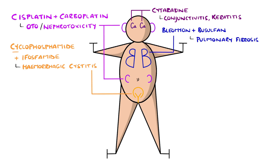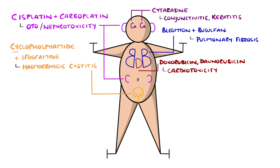Next to the lungs we have a heart, that roughly resembles the letter D, for doxorubicin and daunorubicin that cause cardiotoxicity. It also helps remember dilated cardiomyopathy, which is generally the end result of these drugs, and can also be caused by trastuzumab, a monoclonal antibody also known as herceptin. This can be remembered with the 'her' sounding similar to heart.